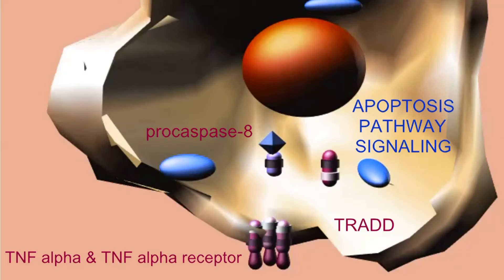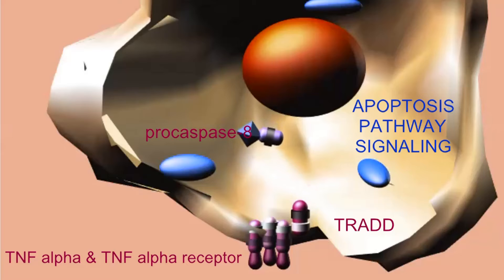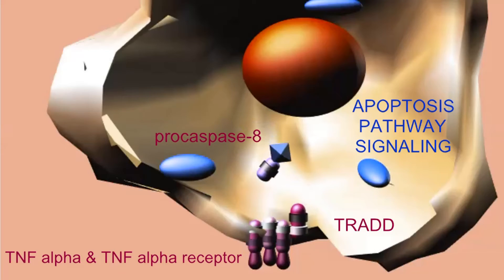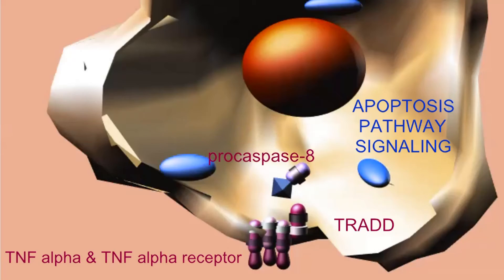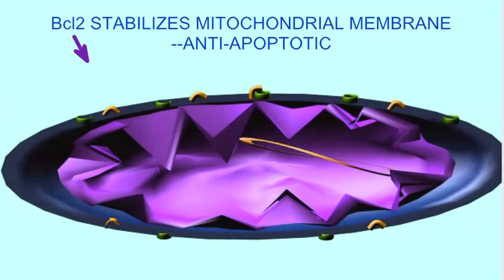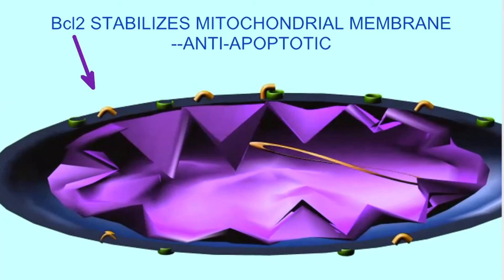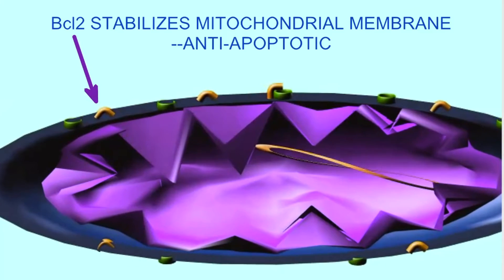Cells may also be signaled by tumor necrosis factor, which binds to receptors on the exterior of the cells and can also activate caspase enzymes by converting the precursor procaspase enzyme into the active form. Caspase enzymes can then have effects on the permeability of the mitochondrial membrane.